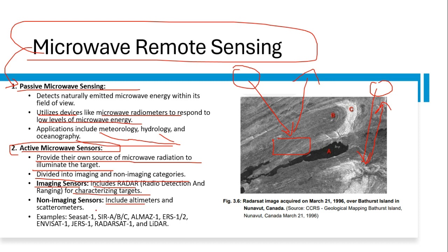Examples of active microwave sensors include CSAT-1, SIR-ABC, ELMAS-1, ERS-1/2, NVSAT-1, JERS-1, RADARSAT-1, and LiDAR. A satellite image example of microwave remote sensing shows a RADARSAT image captured on 21st March 1996.